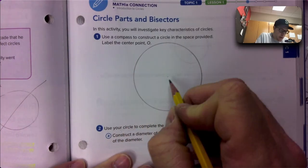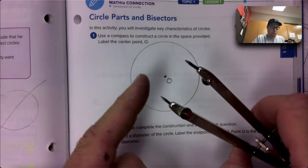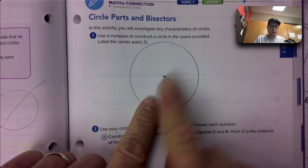It says label the center point O. So the nice thing about my compass is it actually puts a little sharp point into the paper and so I want to acknowledge that's supposed to be the center, okay?